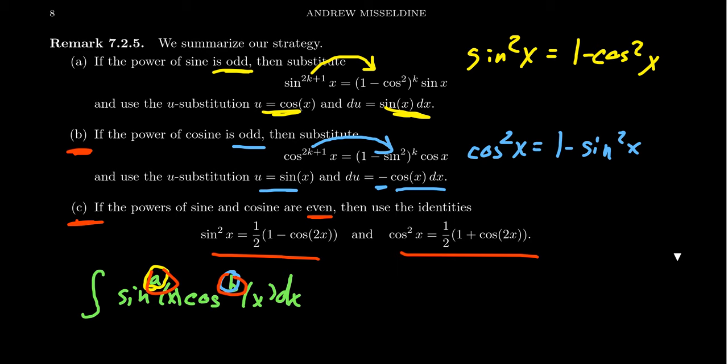So what this strategy does is it tells us that if we have any product of sines and cosines, who cares what the exponents are, we can calculate its antiderivative.